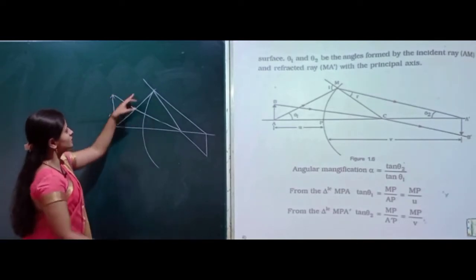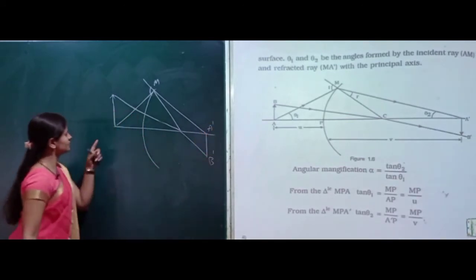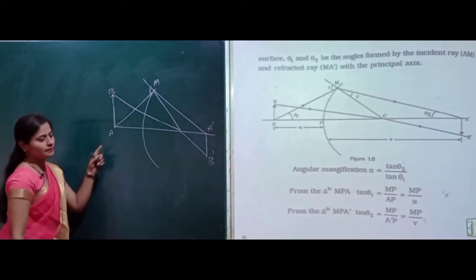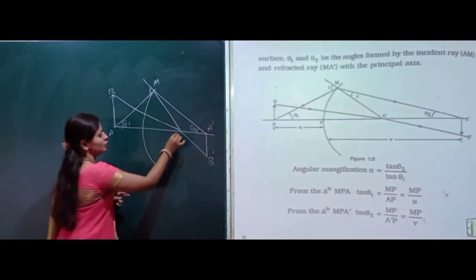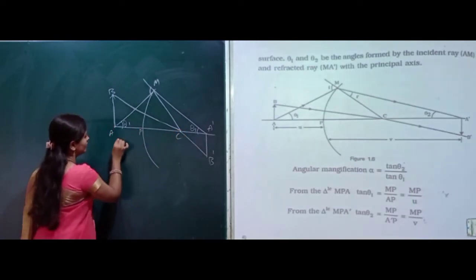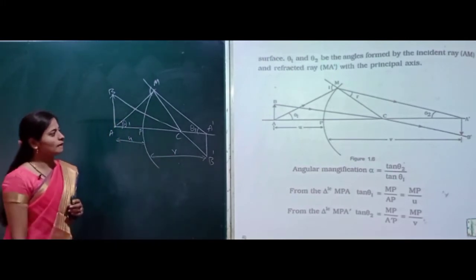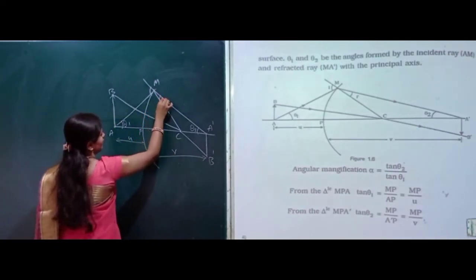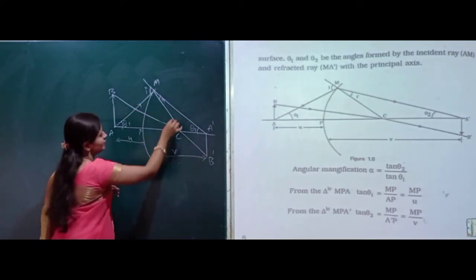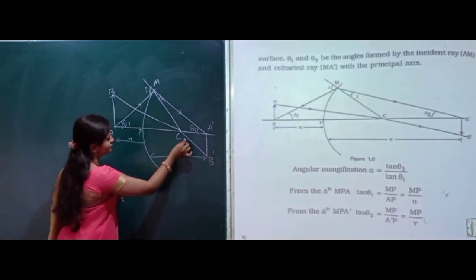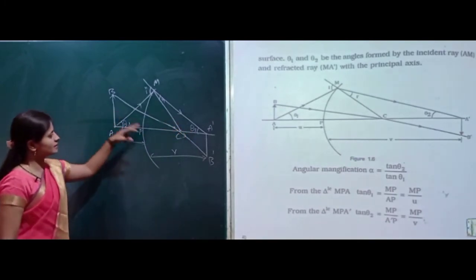In the figure, this point is M and this is A dash, B dash. This is A, B. This is theta 1 and this is theta 2. This point is C, this point is P. This distance is nothing but small u, and this distance is nothing but small v. This is R and this is I. M, P, A dash are the incident ray and refracted ray.